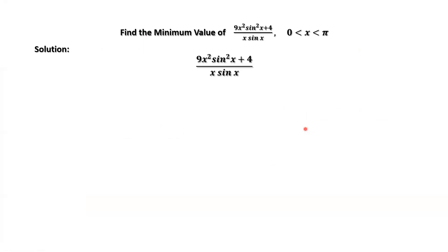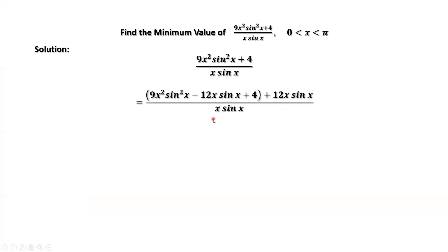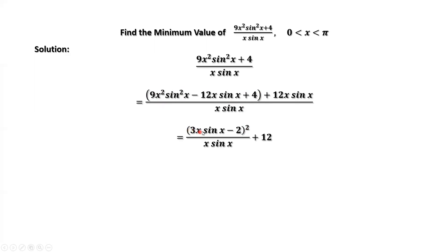We rewrite the numerator of this expression. In the numerator, we subtract 12x times sine x and then add 12x times sine x. We group the first three terms, and we can see the first three terms form a perfect square: 3x times sine x minus 2, squared. The second term, 12x times sine x divided by x times sine x, equals 12.